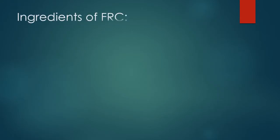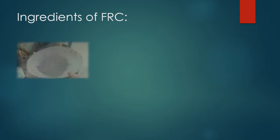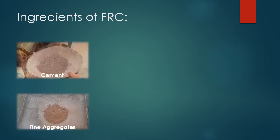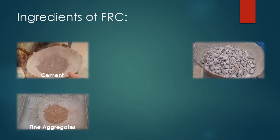Ingredients used for the formation of FRC are cement, fine aggregate, coarse aggregate, polypropylene fiber, and water.